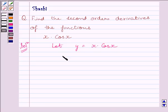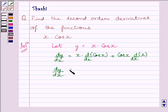Now, differentiating both sides with respect to x, we get dy/dx is equal to x multiplied by the derivative of cos x plus cos x multiplied by the derivative of x. Now, this is equal to x multiplied by minus sin x plus cos x multiplied by 1.